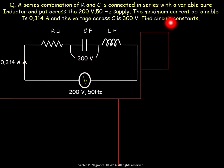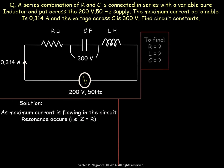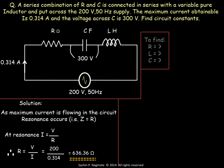The voltage across capacitor is also given as 300 volt. Maximum current is flowing, therefore resonance occurs and at resonance Z equals R. We write I = V / Z, but during resonance Z = R, so I = V / R. Therefore R = V / I = 200 / 0.314 = 636.36 ohm. So we got the value of the first constant, the resistor.